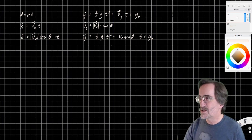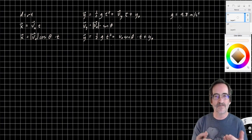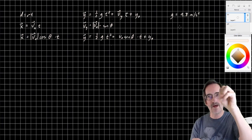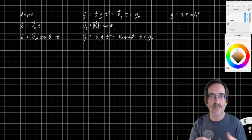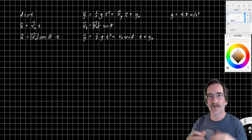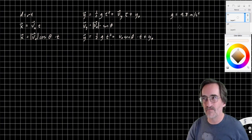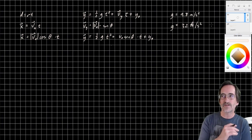So the entire equation becomes y equals one-half the acceleration of gravity times time squared plus the initial velocity times the sine of the angle theta times time plus the initial vertical position. So there we have our formula. And that value for g depends on your circumstances. g is 9.8 meters per second per second. If you're in feet per second, it's 32 feet per second per second.